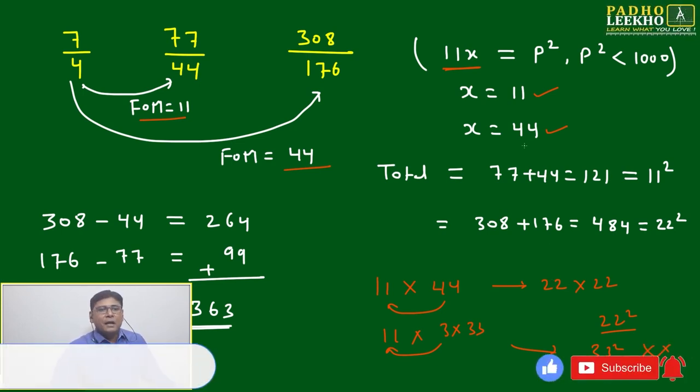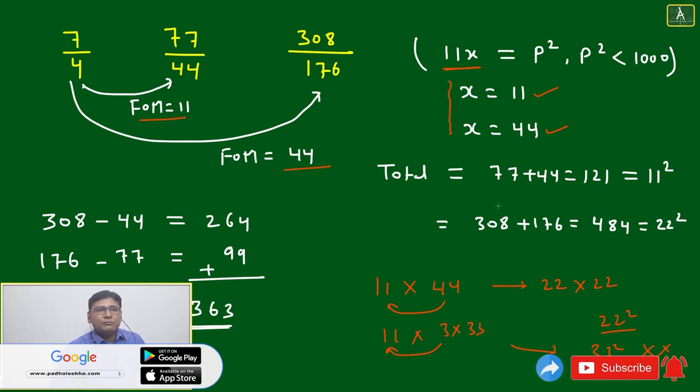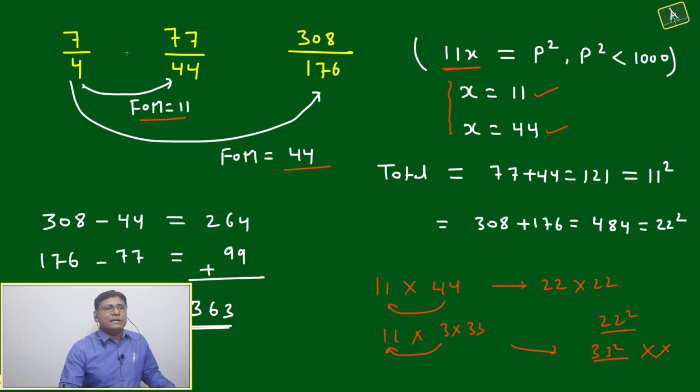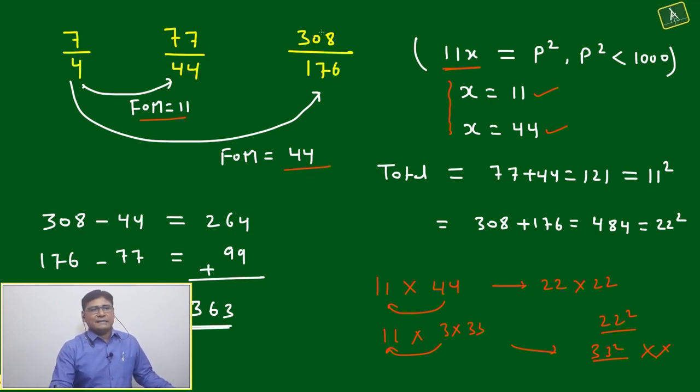Means it is not our selected option. Means only two choice we have, only two value of x will satisfy this condition: x equal to 11, x equal to 44. If x equal to 11 then factor multiplication 11, this ratio will change 7:4 equal to 77:44, and factor multiplication 44 it will change to 308:176. Then this is boy to girl ratio is given.